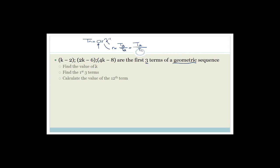It says find the value of k. The common ratio is what's going to give you the value of k. This is term 1, this is term 2, and this is term 3. We know that term 3 divided by term 2, which is 4k minus 8 all over 2k minus 6, has to equal term 2 divided by term 1, which is 2k minus 6 all over k minus 2. We can cross multiply and solve for k, so 4k minus 8 times k minus 2 equals 2k minus 6 all squared.